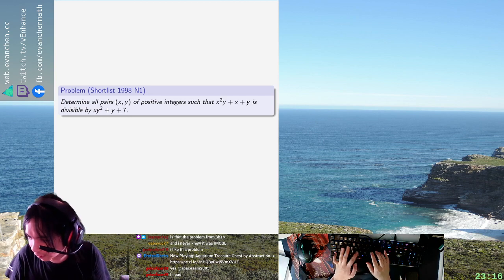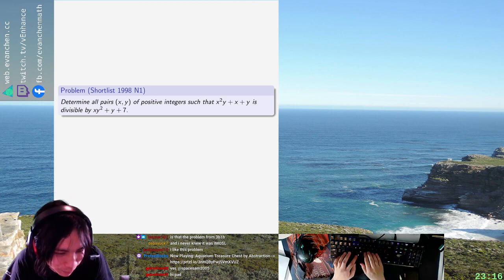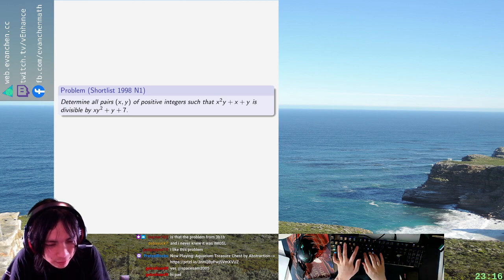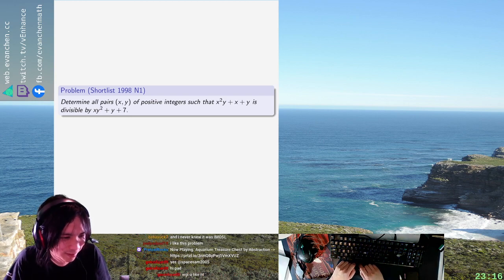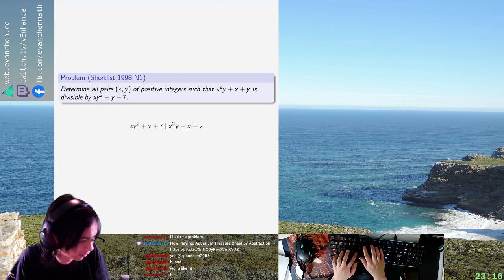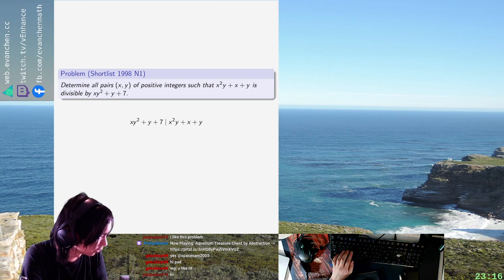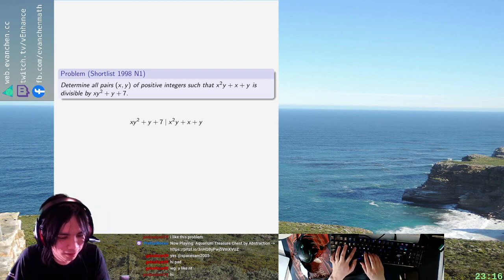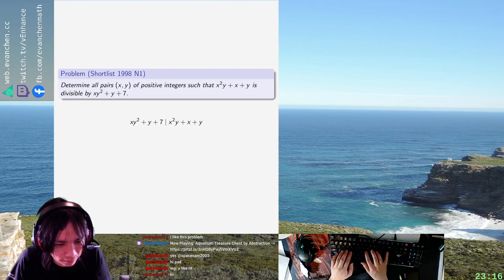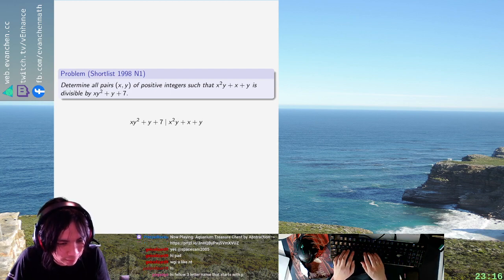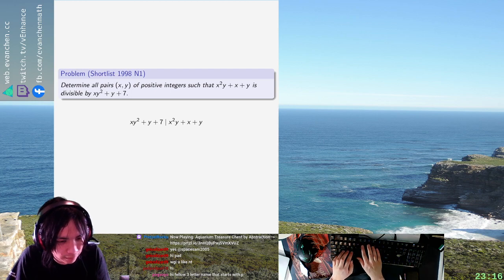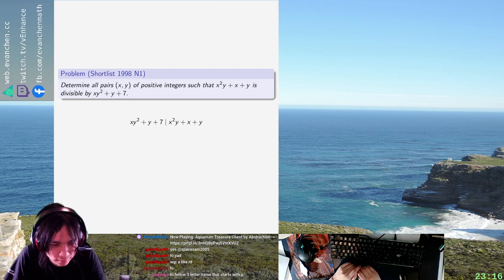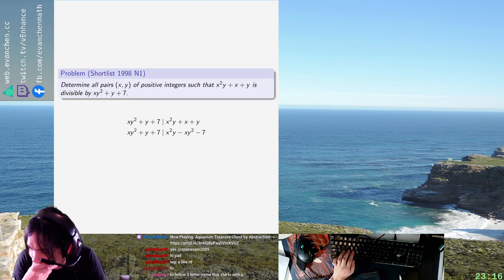Okay, so x squared plus x plus y divides xy squared plus y plus... I already flipped it. x squared y plus x plus y. Do I just subtract? Do I just subtract this edit? And then it's like x squared so the y goes away. Yeah minus xy squared minus 7.